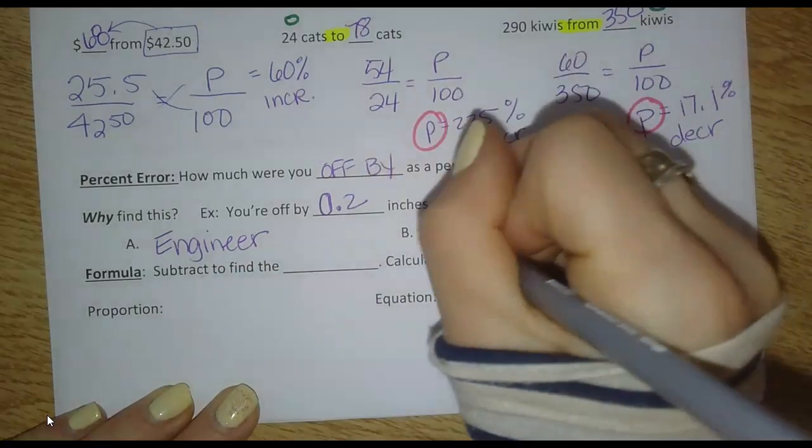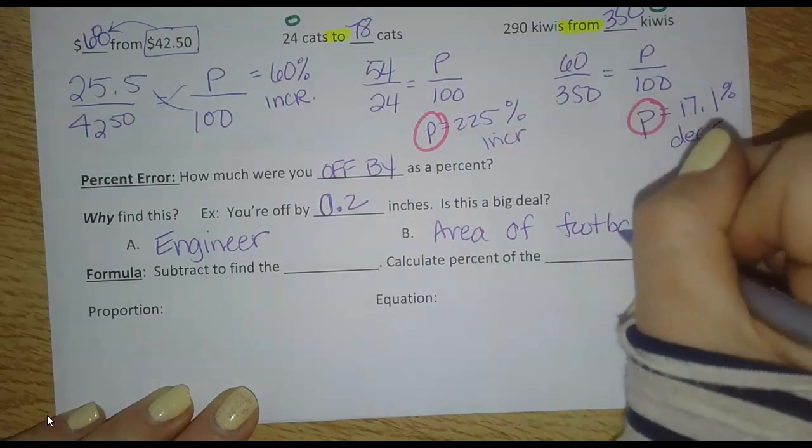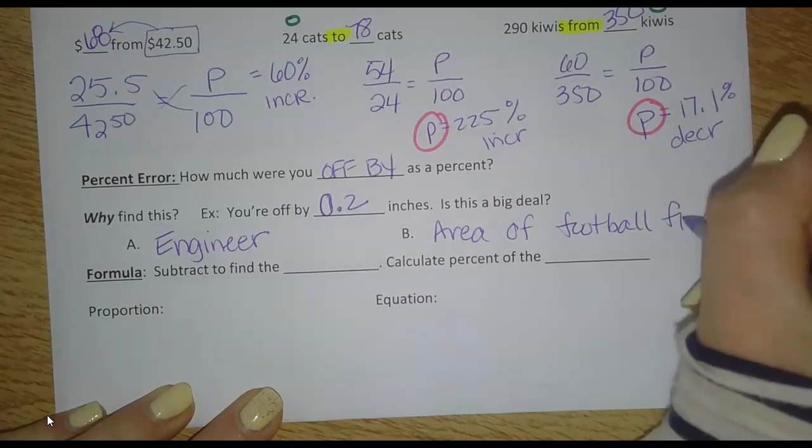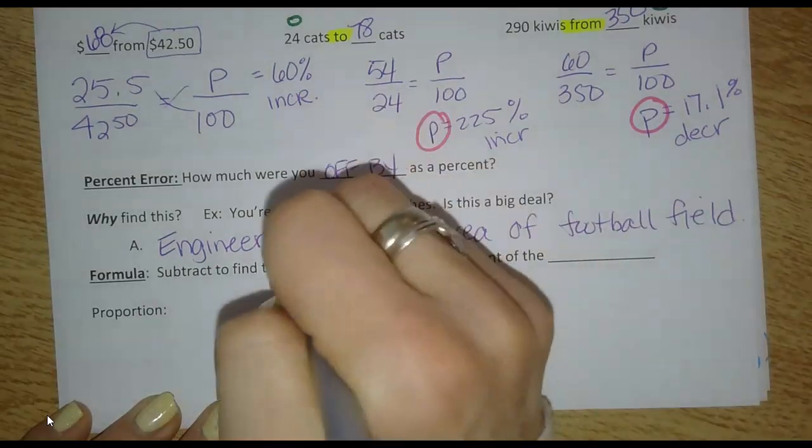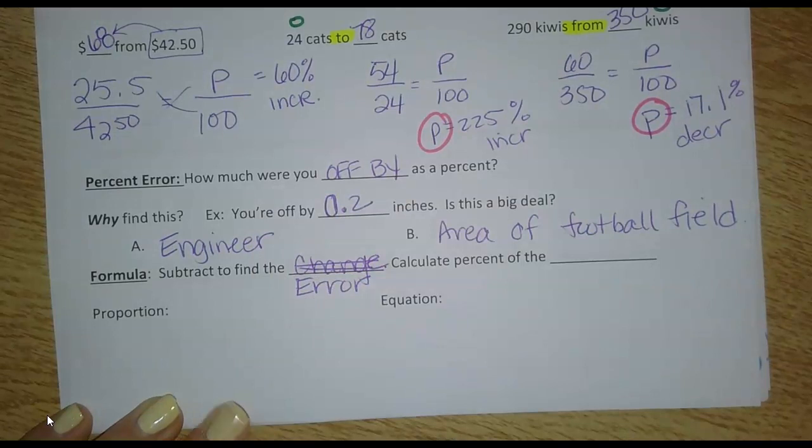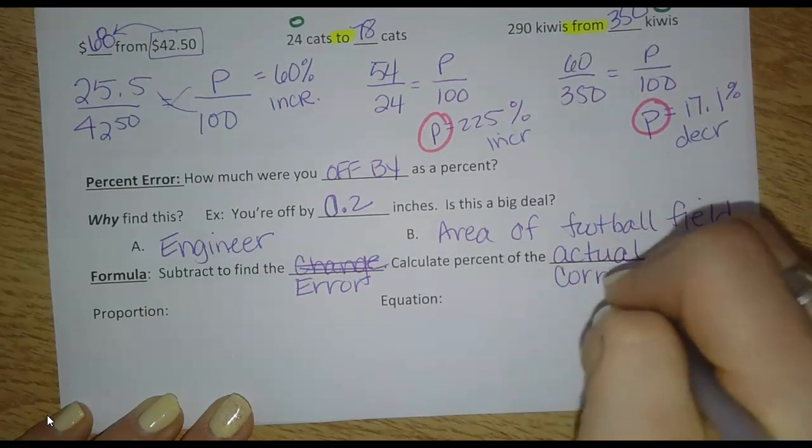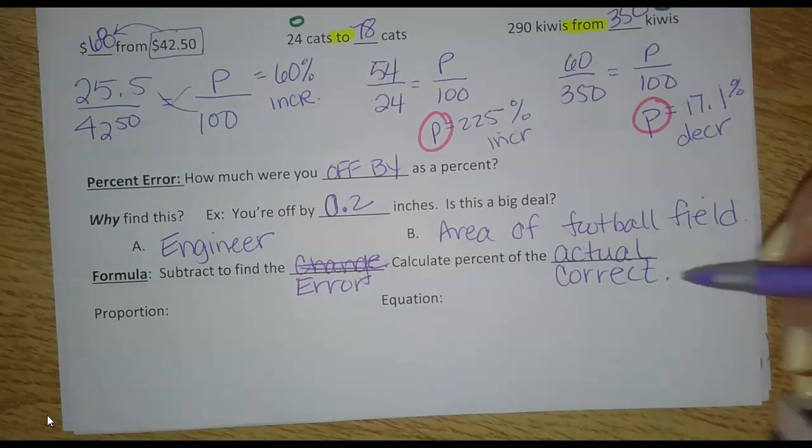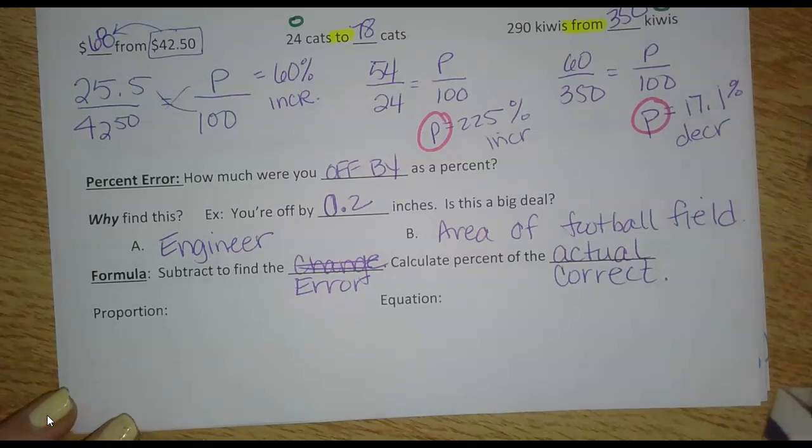Let's say you were off by two tenths of an inch if you were measuring the area of a football field. Well, would two tenths of an inch make much difference in the whole area of the football field? Not really. Not a big deal. You'd barely notice it if you were off by that much. So again, we want to know how much is that error compared to the numbers we're looking at. So very similar to what we already did. Subtract to find the error. How much were you off by? And then calculate the percent of the actual or correct amount. So it depends how it's worded. You might not see the word actual, but whatever is the correct number, that's what's going to go on the bottom in the whole spot.